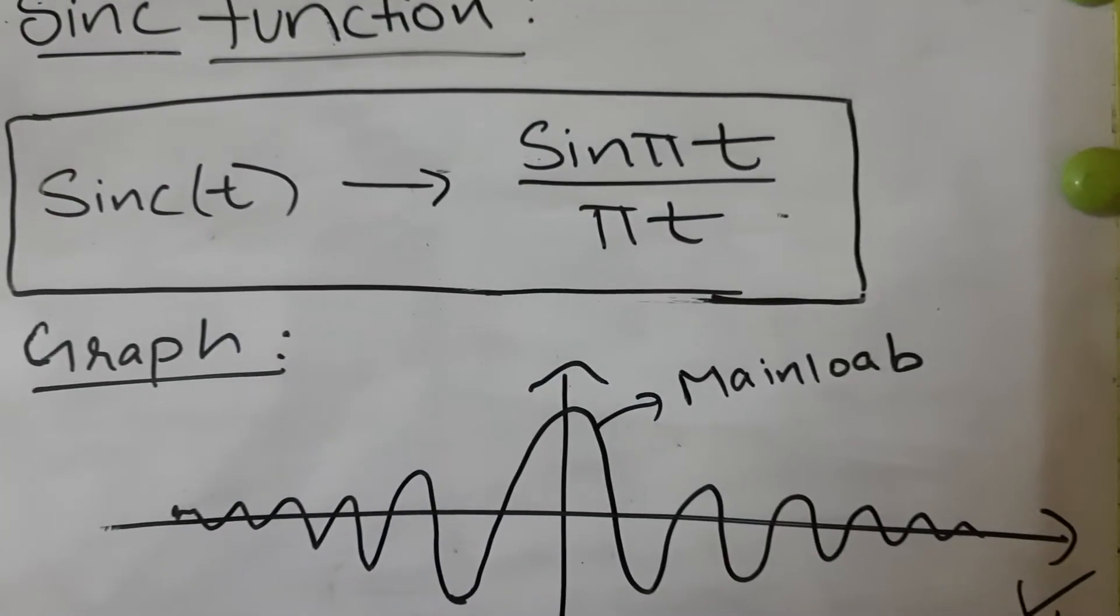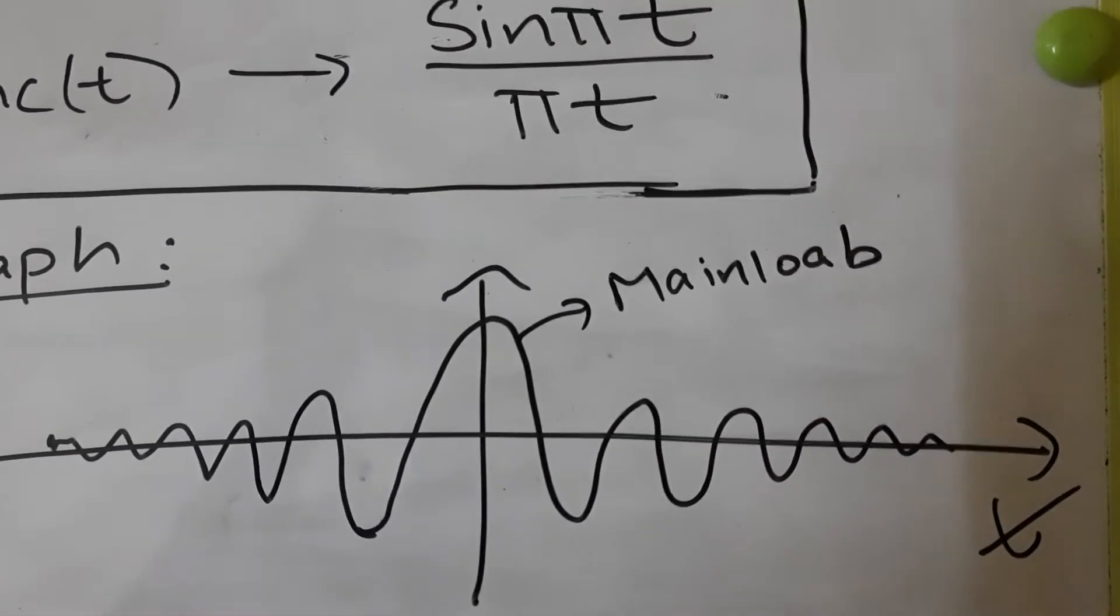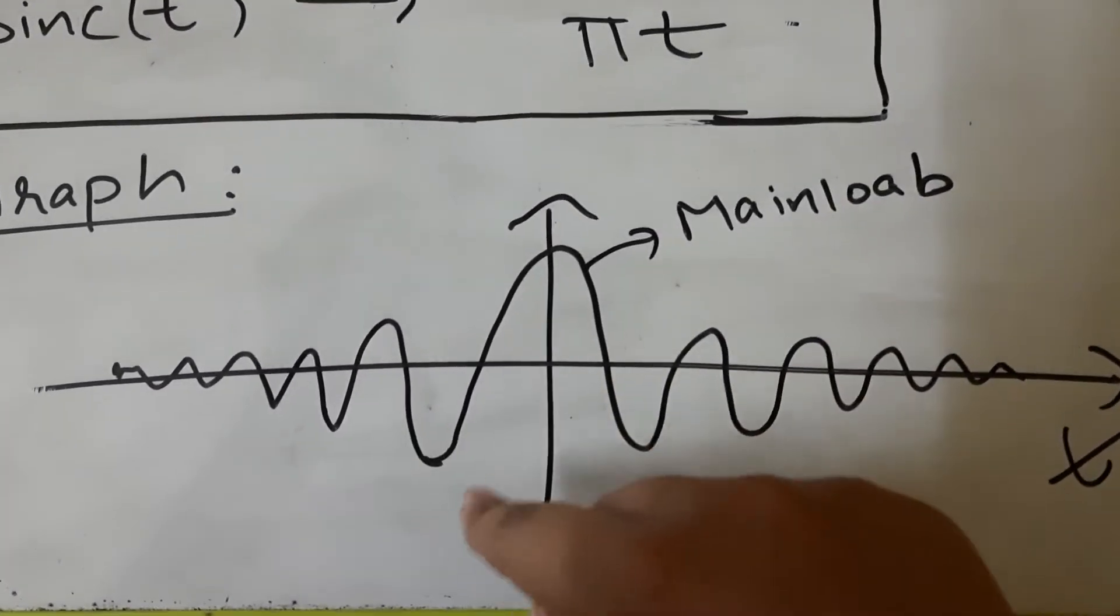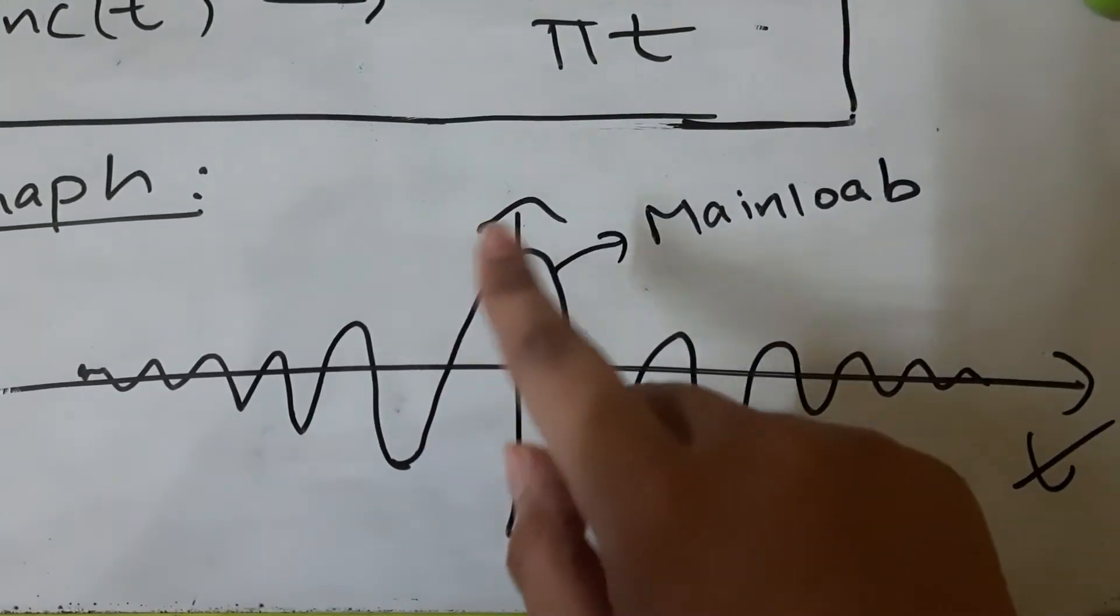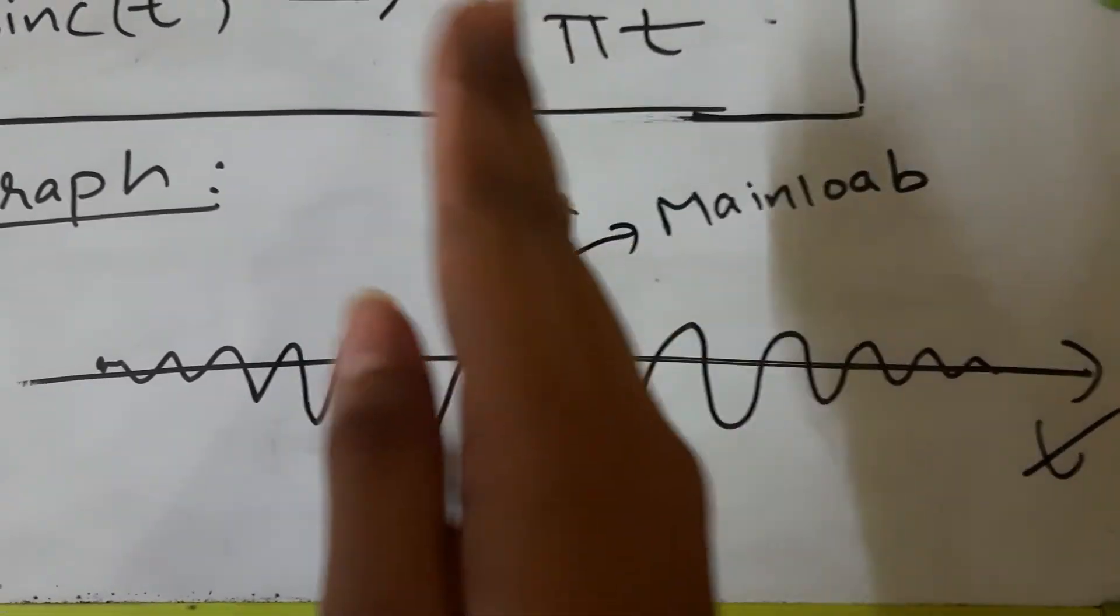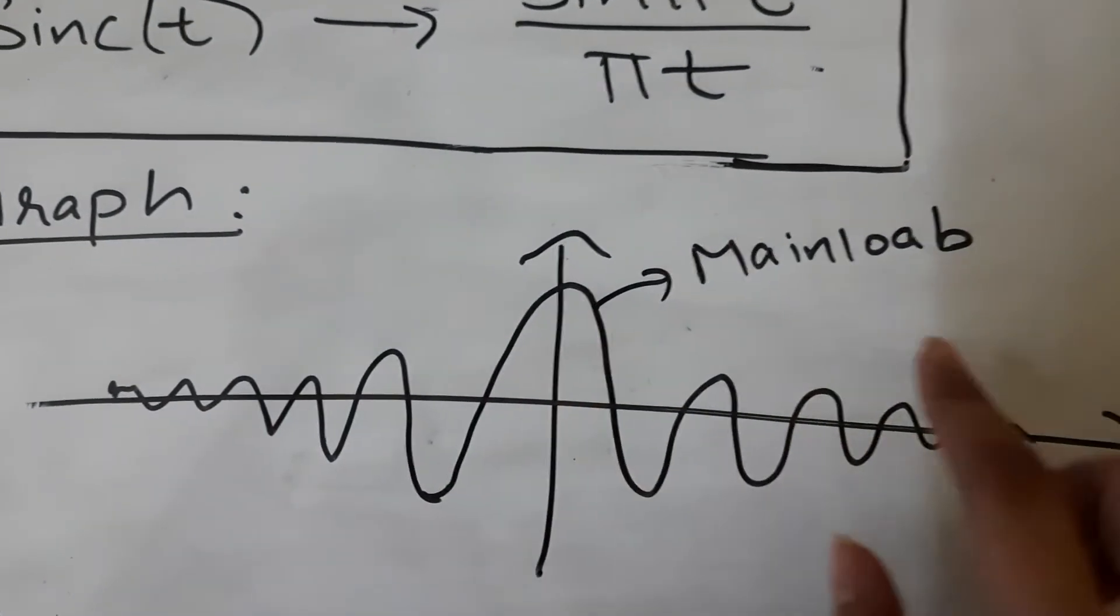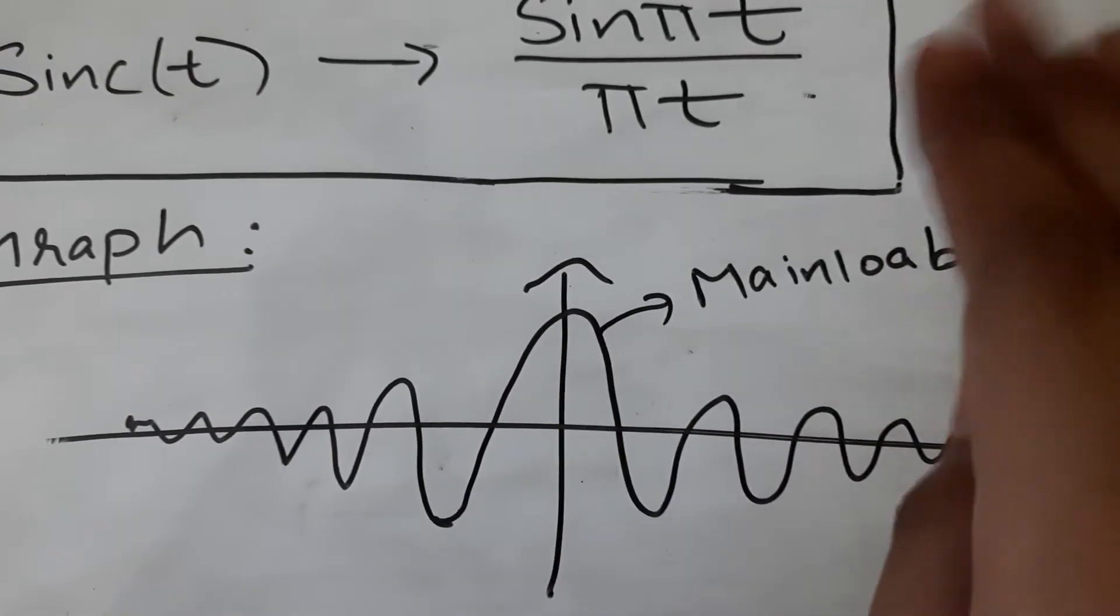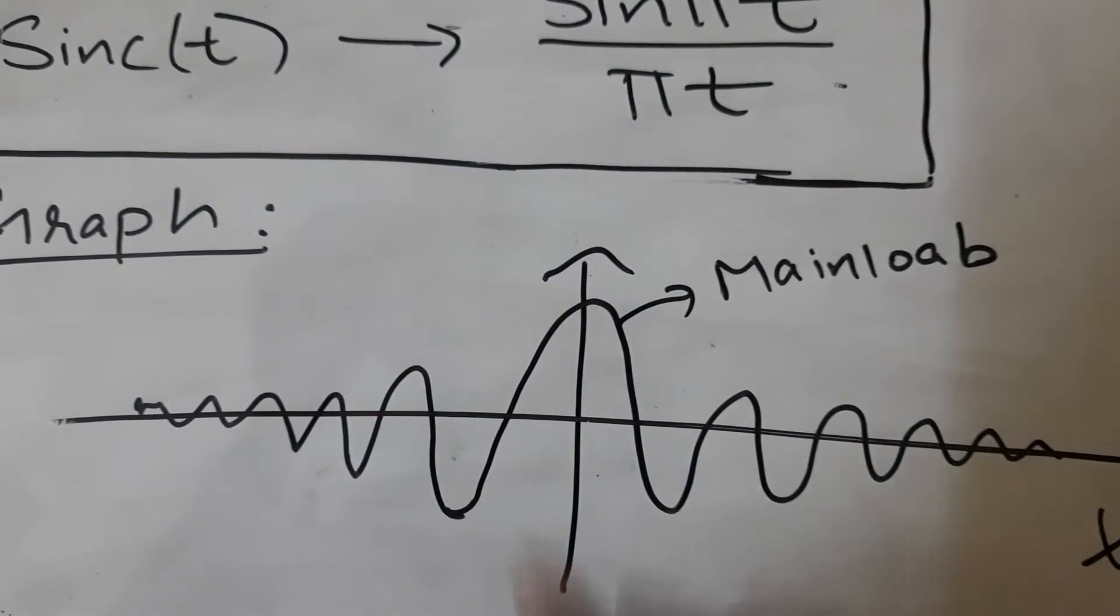Let us see the graph of the sinc function. Now the graph of the function is very oscillatory. We observe one thing that we have a maximum value and after that the values keep on decreasing on the right side as well as on the left side. And this lobe is known as the main lobe. Whatever information the sinc signal contains, 90% of the information will be present in the main lobe alone.